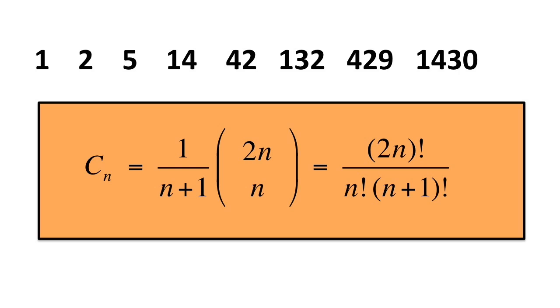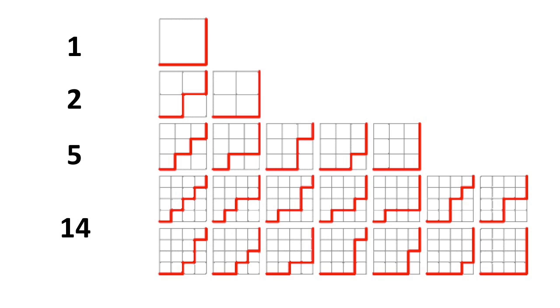There are many other interpretations of this sequence. It counts the number of paths in an n-by-n grid which start in the bottom left corner, only move right and up,